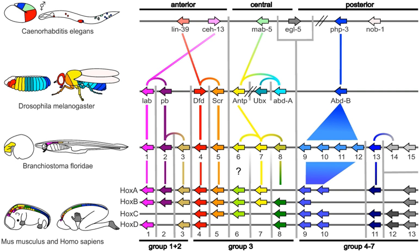A recapitulation theory of evolutionary development was proposed by Etienne Serres in 1824–26, echoing the 1808 ideas of Johann Friedrich Mechel. They argued that the embryos of animals went through or recapitulated a series of stages and structures, each of which resembled an animal lower down the Great Chain of Being. For example, the brain of a human embryo looked first like that of a fish, then in turn like that of a reptile, bird, and mammal before becoming clearly human.